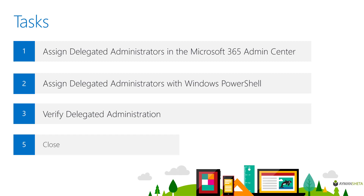We have three tasks within this exercise. Starting with task 1, we will assign roles using the Microsoft 365 admin center. With task 2, we will assign the same or different roles using Windows PowerShell, which gives you experience performing different types of administrative functions. Moving to task 3, we will verify delegate administration — testing that assigned permissions are correct for each user.